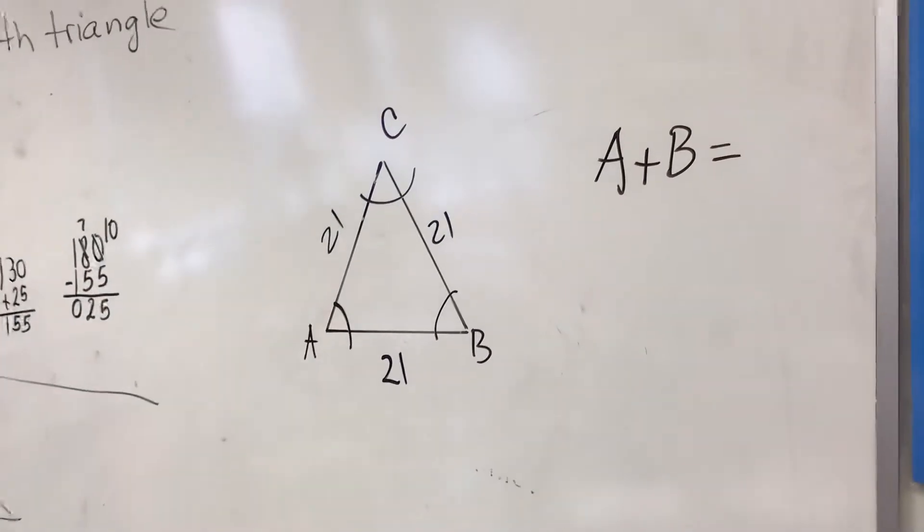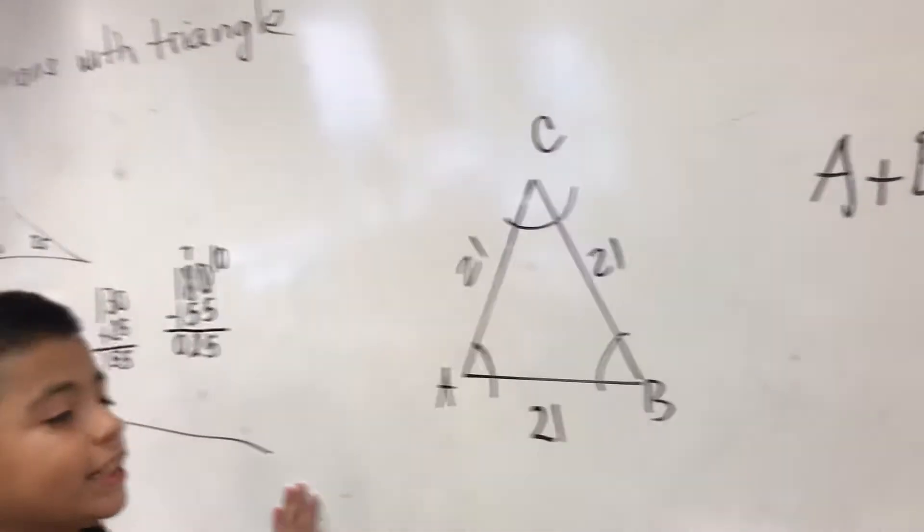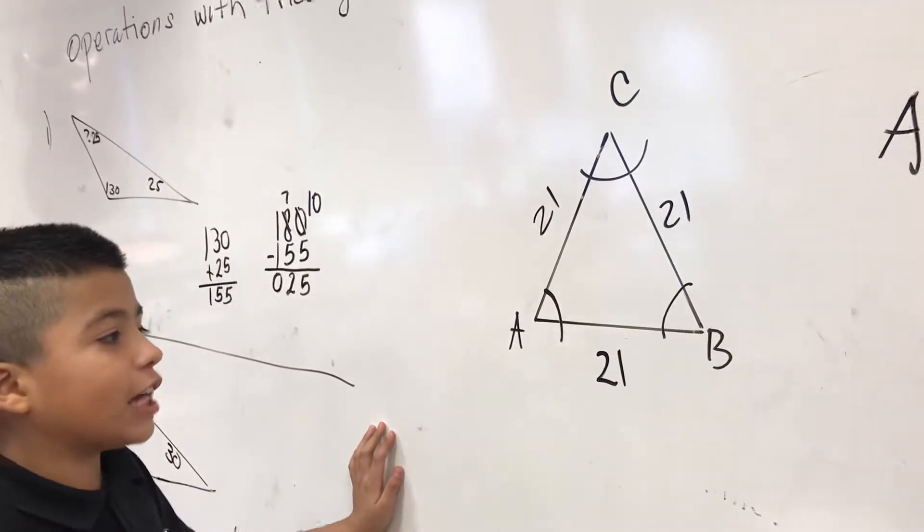Okay, how do you get your 120 degrees? So, A has 21, 21, and 21, which is equal, so that means the angles have to be equal.